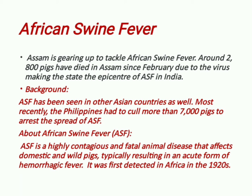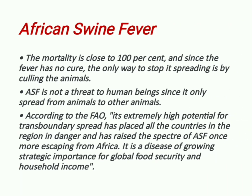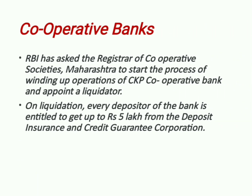African Swine Fever is a highly contagious and fatal animal disease that affects domestic and wild pigs, typically resulting in an acute form of hemorrhagic fever. It was first detected in Africa in the 1920s. Mortality is close to 100%, and since the fever has no cure, the only way to stop its spread is by culling the animals. ASF is not a threat to human beings as it only spreads from animal to animal. According to the FAO, its extremely high potential for transboundary spread has raised concern for global food security and household income.